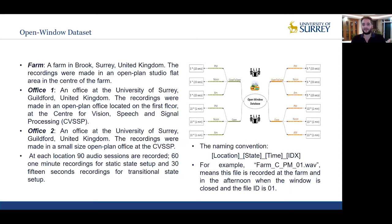This dataset is manually recorded at three different locations: a farm and two offices. The farm is located in The Brook in Surrey County, United Kingdom. The recordings were made in an open-plan studio flat area in the center of the farm, and have the lowest level of background noise due to a quiet environmental surrounding. Office number one is at the University of Surrey, Guildford, United Kingdom. The recordings were made in an open-plan office on the first floor at the Center for Vision, Speech, and Signal Processing. Since this office accommodates 16 researchers, recordings here have the highest level of background noise.